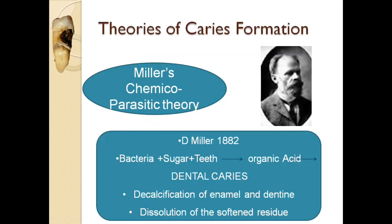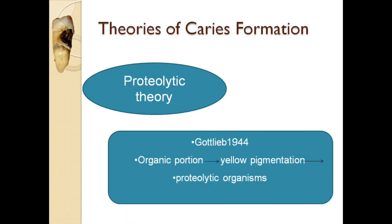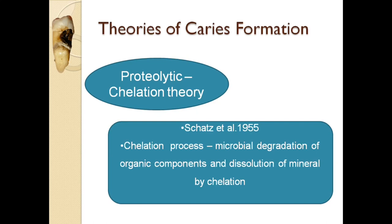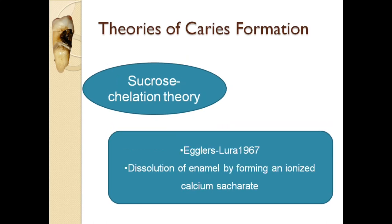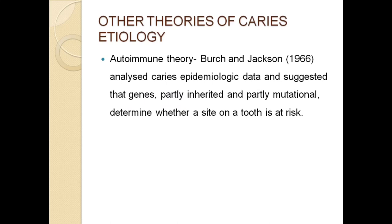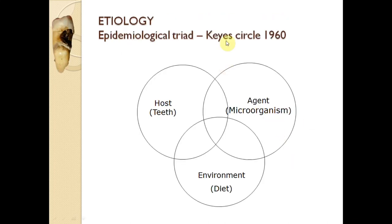There are various theories of caries formation. The most common is Miller's chemical parasite theory: bacteria plus sugar plus teeth produce organic acid leading to dental caries. Other theories include the proteolytic theory by Gottlieb — destruction of the organic portion by proteolytic organisms — the proteolytic chelation theory by Schwartz et al., the sucrose chelation theory by Eccles and Flora in 1967, and the autoimmune theory by Bowen and Jackson.